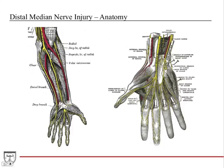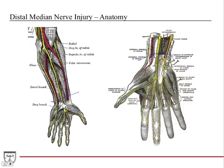A distal median nerve injury is going to be more at the wrist. The median nerve comes in here and it's going to be strictly affecting the hand muscles because the median nerve has already given off innervation to all the forearm flexor muscles more proximally. Down here we're talking about affecting the hand, where the median nerve gives off innervation through the recurrent branch to the thenar eminence and to the lumbricals.